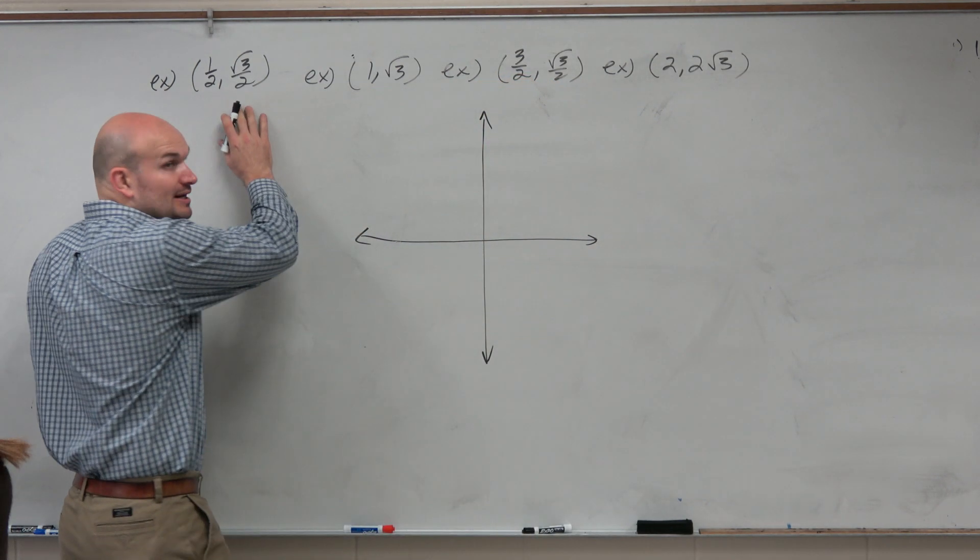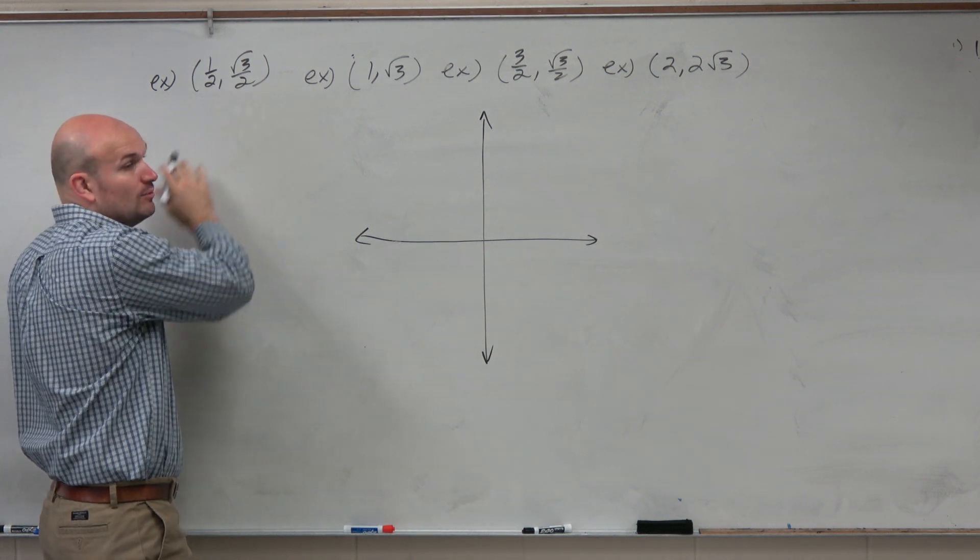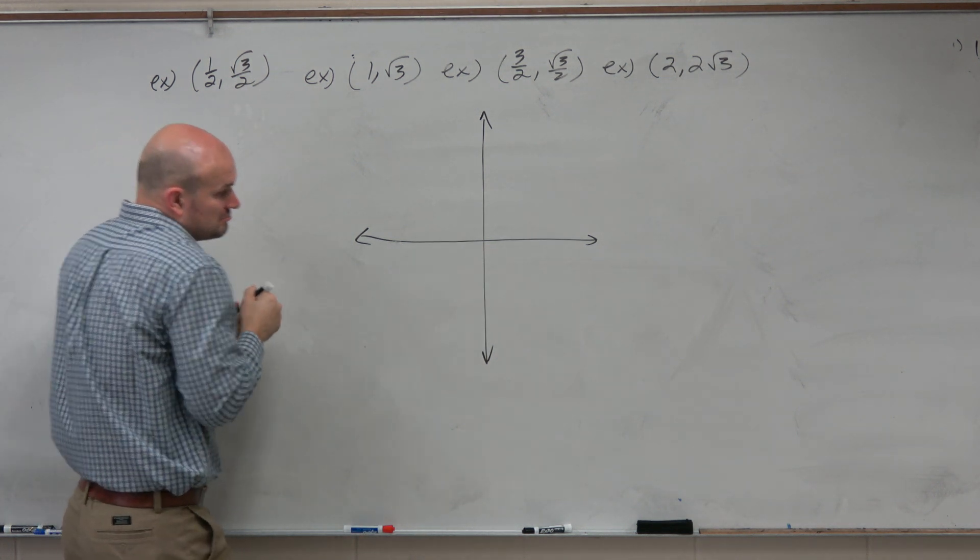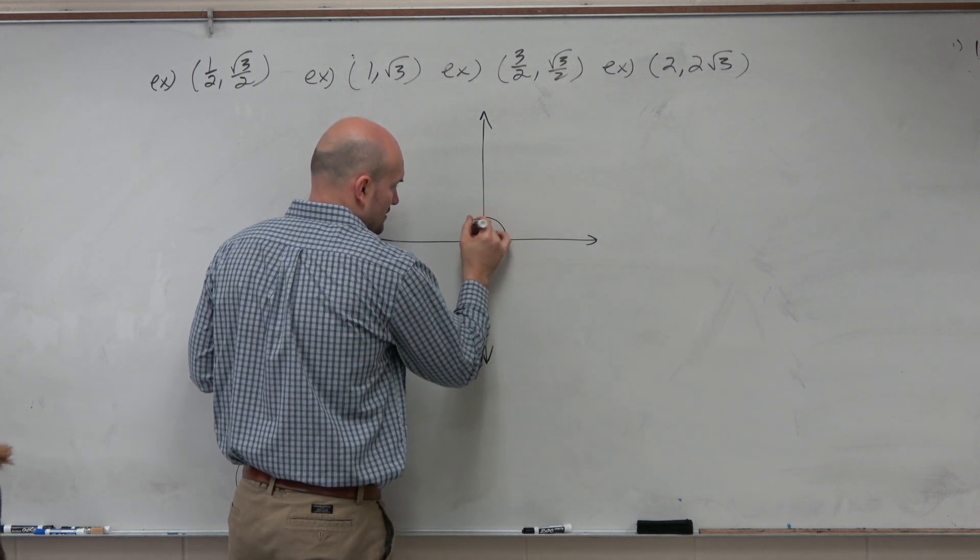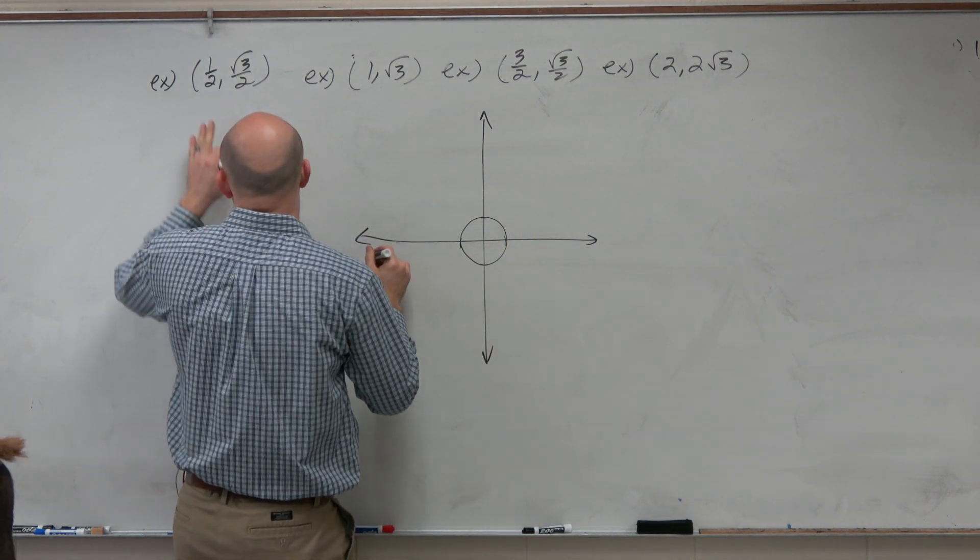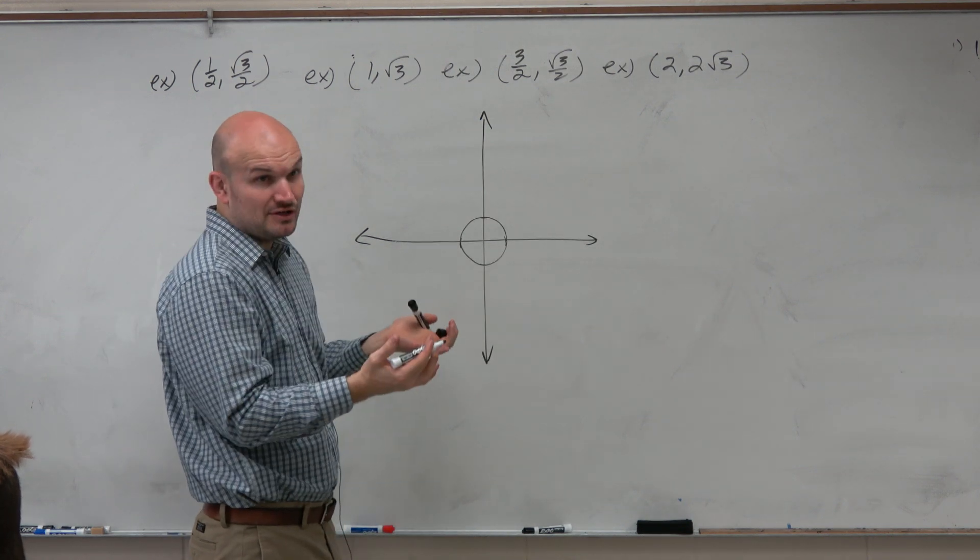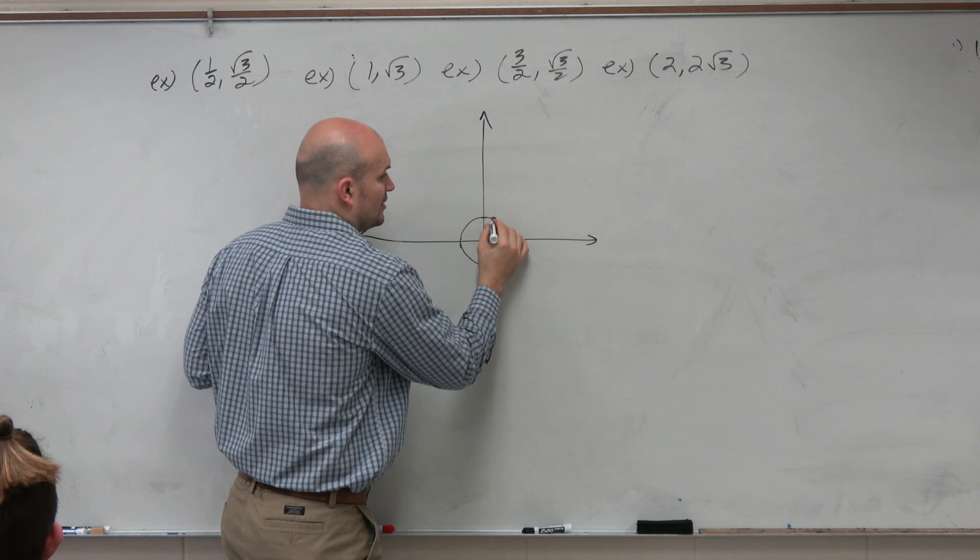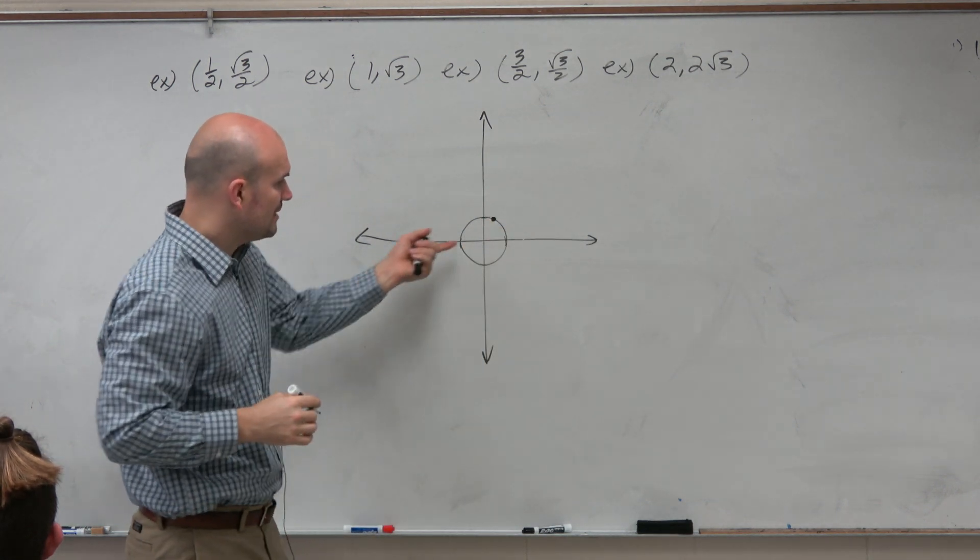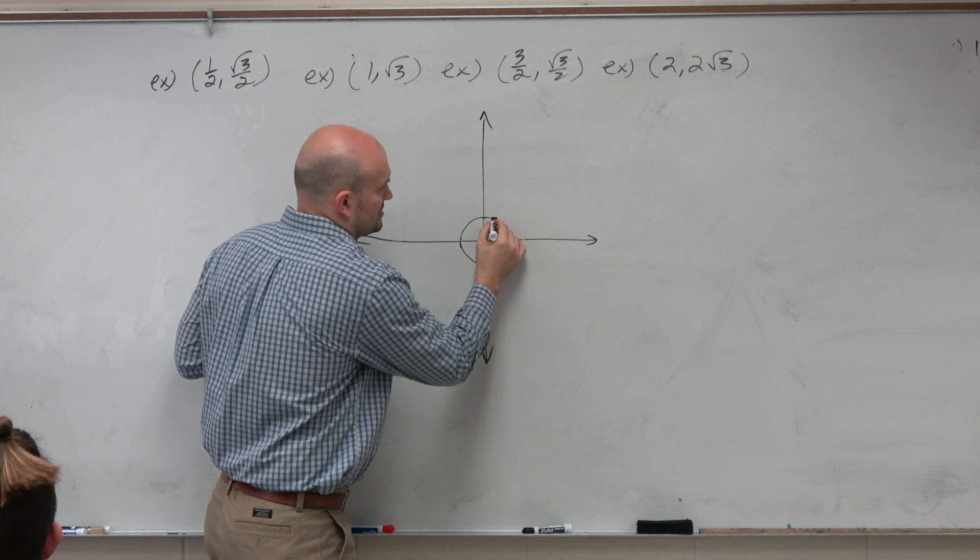However, I do recognize a point that I'm kind of familiar with, the 1/2, square root of 3 over 2. So I can probably estimate where that is. If I drew the unit circle here, I remember that 1/2, square root of 3 is on the unit circle, and it has an angle of 60 degrees or pi over 3. So it's probably somewhere right around there.